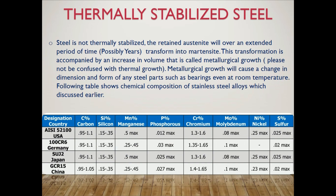Sulfur 0.025% max. In China: Carbon 0.95–1.05%, Silicon 0.15–0.35%, Manganese 0.25–0.45%, Phosphorus 0.027% max, Chromium 1.4–1.65%, Molybdenum 0.1% max, Nickel 0.23% max, Sulfur 0.02% max.